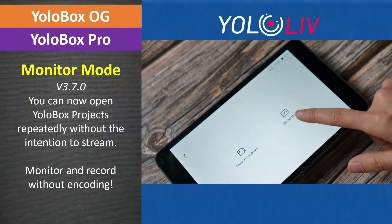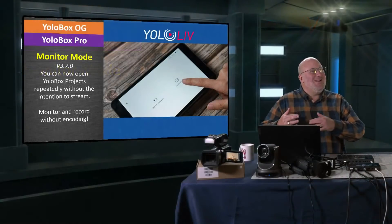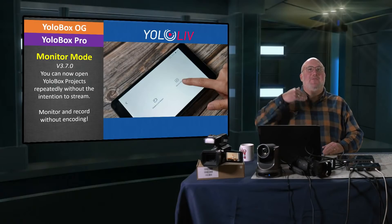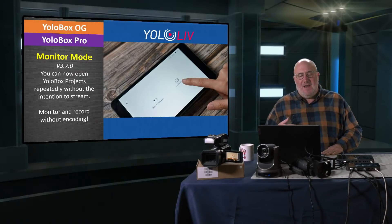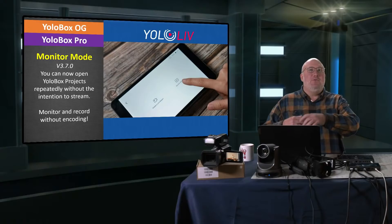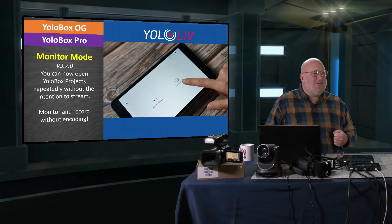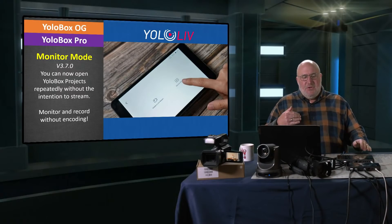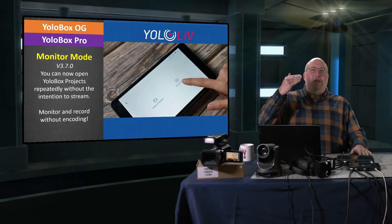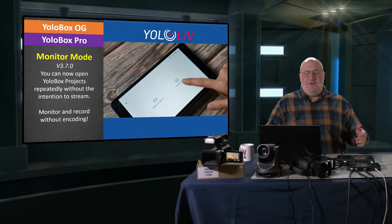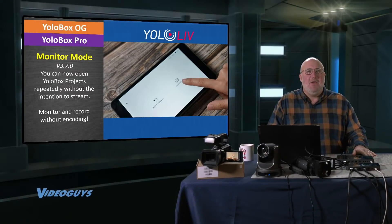First and foremost is monitor mode. The terminology can get a bit lost in translation, but monitor mode basically means that in the original YoloBox you had to be streaming first for everything else to engage — you couldn't just record. Now you can use it as just a recorder and do a show that you never stream. This is great for YouTubers and people who want to make training videos. You can monitor and record without encoding and streaming — those functions are now separated.